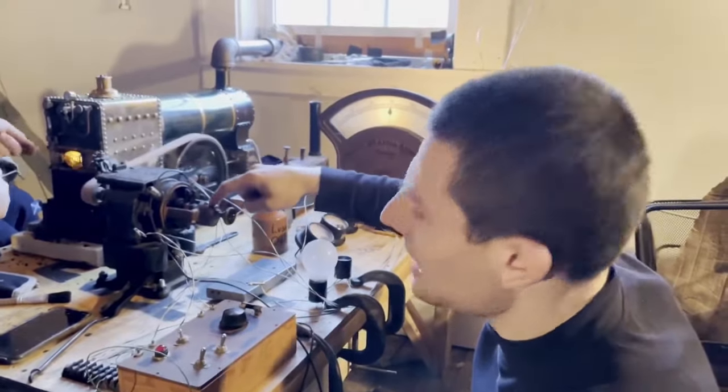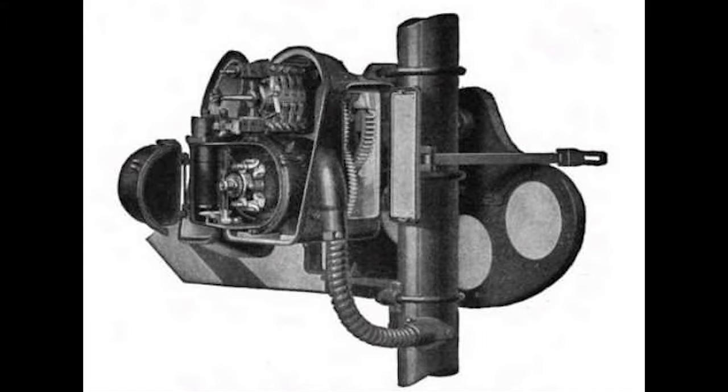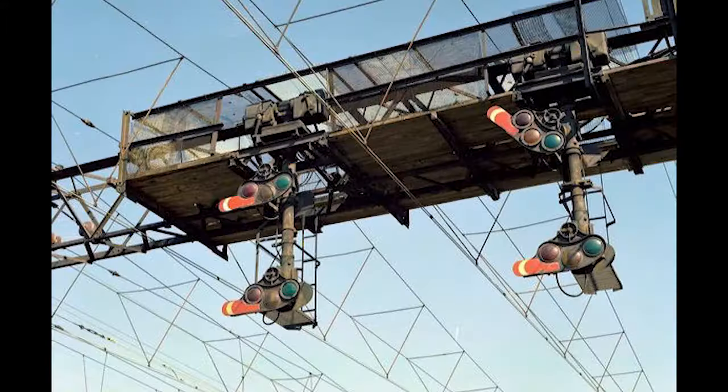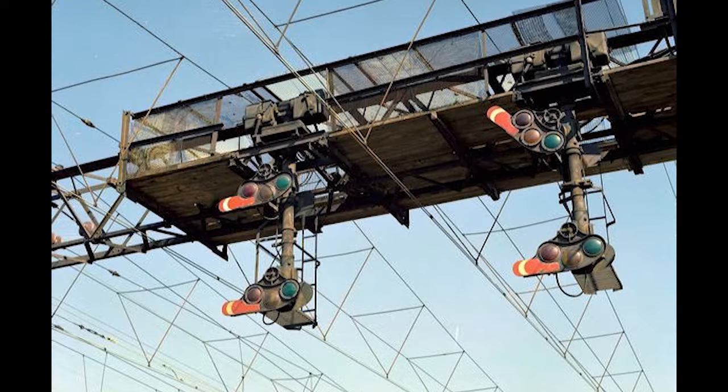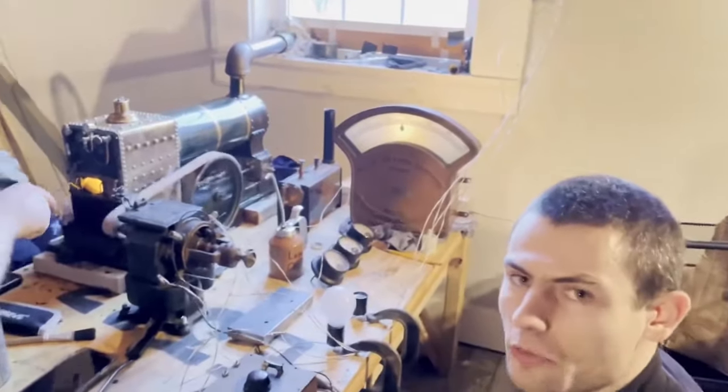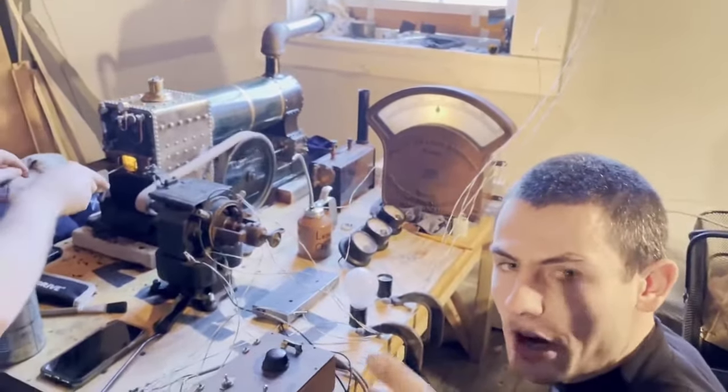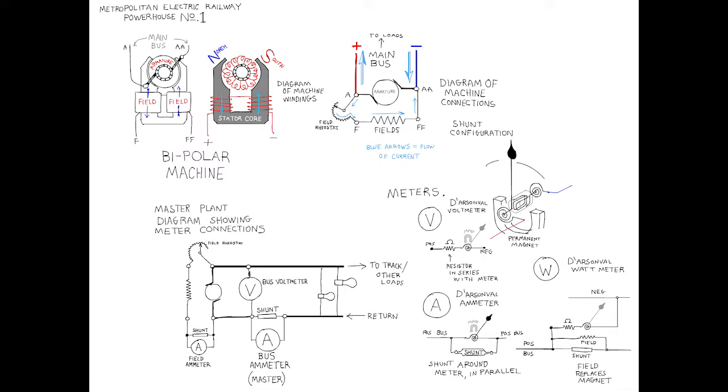This is a United Switch and Signal semaphore motor. This used to drive the big, heavy arms of railroad signals up and down. I rewired it as a self-exciting shunt-wired dynamo. We'll put a screenshot of the wiring diagram over my voice there.